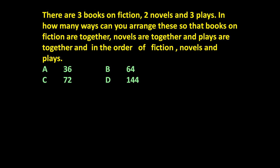The given problem is: there are three books on fiction, two novels, and three plays. In how many ways can you arrange these so that books on fiction are together, novels are together, and plays are together — and in the order of fiction, novels, and plays? That means first books on fiction should be there, then novels, then plays.